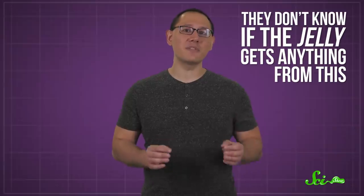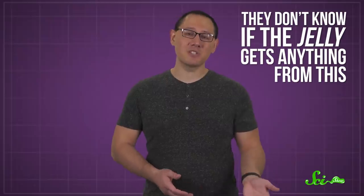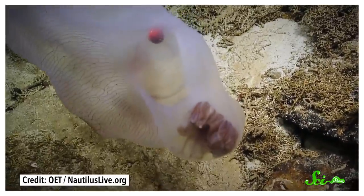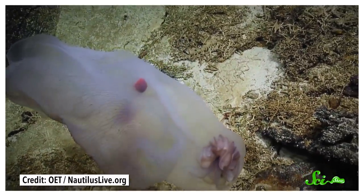And scientists aren't quite sure who benefits from this relationship and how. Specifically, they don't know if the jelly gets anything from this. Nor do they know whether the isopod is doing any harm, or is just along for the ride. They do know that these isopods are great at finding large jellies like deepstaria, and then settling in for the long haul. But there's still a lot left to learn about these weird deep sea critters.